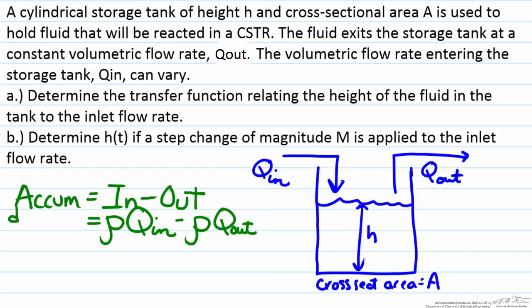So the accumulation will be d(mass)/dt, and the amount of mass of the system will be equal to the volume multiplied by the density, so it will be the density rho, and the volume of fluid inside the tank at any given time will be A, the cross-sectional area, times h.